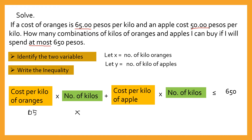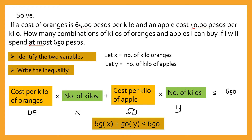The cost per kilo of apples is 50, and this is y. So the inequality now is 65 times x plus 50 times y is less than or equal to 650.